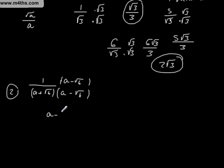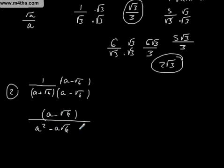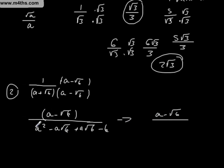On the top we just leave it as a minus root b. On the bottom, a times a is a squared; a times negative root b is negative a root b; positive root b times a is plus a root b; and then negative root b squared gives negative b. So all we're left with is a squared minus b, as the plus a root b and minus a root b cancel each other out.